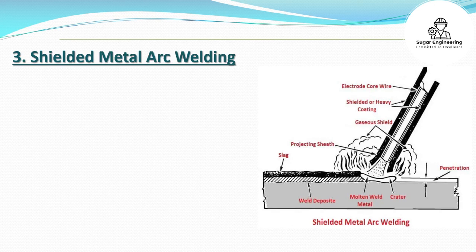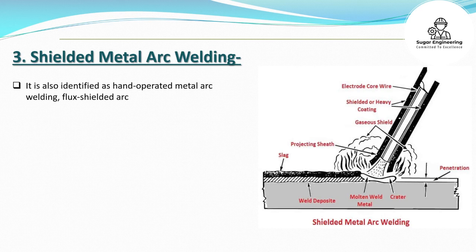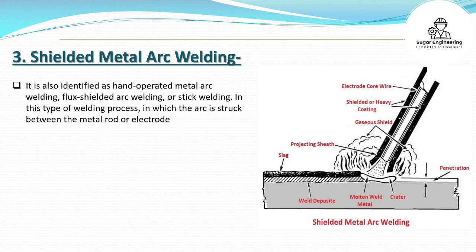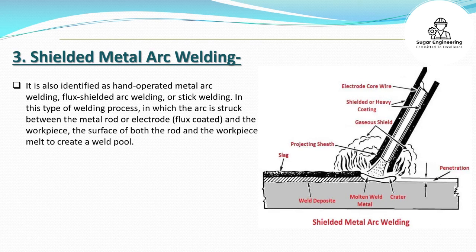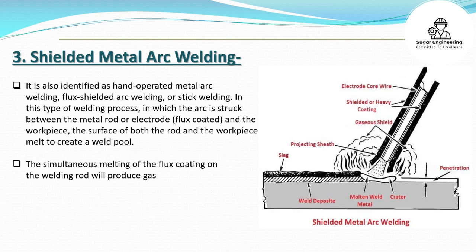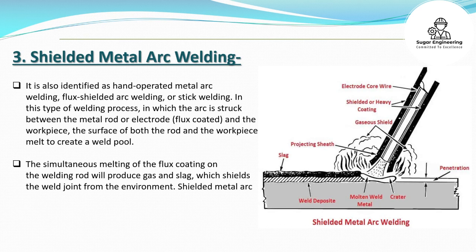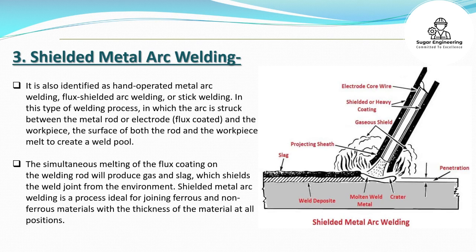3. Shielded Metal Arc Welding. It is also identified as hand-operated metal arc welding, flux-shielded arc welding, or stick welding. In this type of welding process, the arc is struck between the metal rod or electrode, flux-coated, and the workpiece; the surface of both the rod and the workpiece melt to create a weld pool. The simultaneous melting of the flux coating on the welding rod will produce gas and slag, which shields the weld joint from the environment. Shielded Metal Arc Welding is ideal for joining ferrous and non-ferrous materials at all positions.